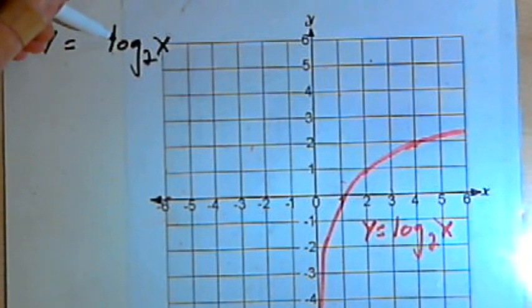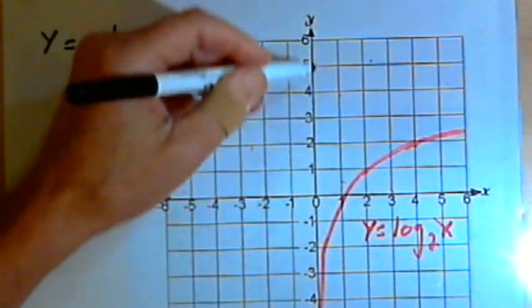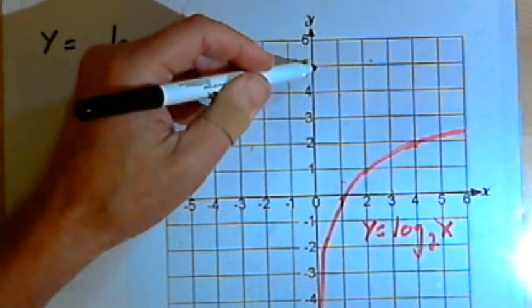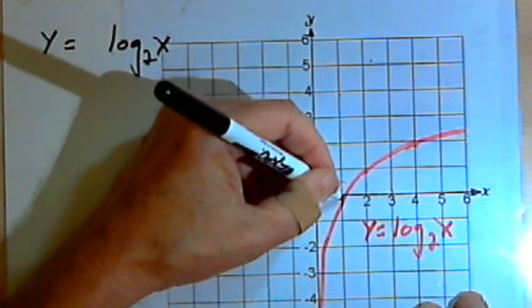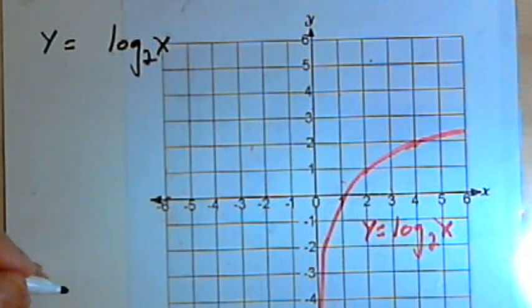Like all basic logarithmic functions, it has a vertical asymptote along the y-axis and it has an x-intercept at (1,0). So let's look at some transformations of this.